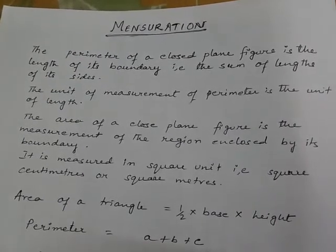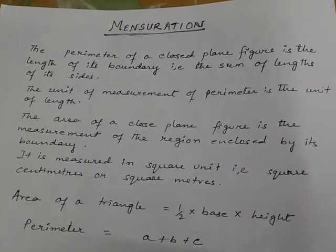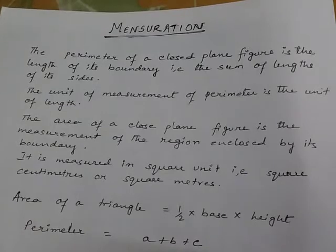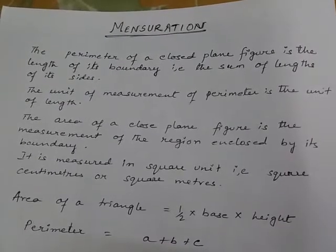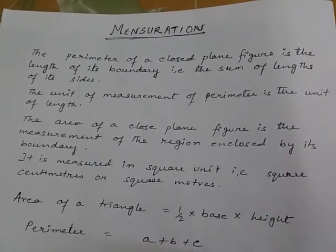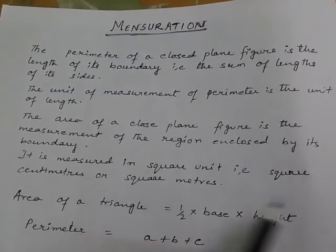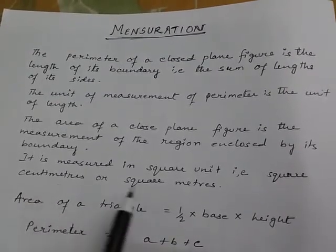The unit of measurement of perimeter is a unit of length. The area of a closed plane figure is the measurement of the region enclosed by its boundary. It is measured in square units, that is, square centimeters or square meters.